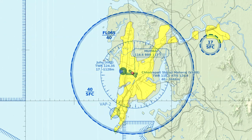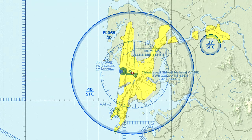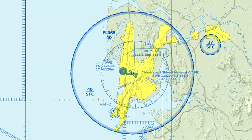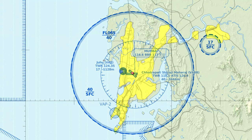Mumbai radar to Bryansk Air 276. Descend and maintain 4,500. Adjust heading to 290. Contact Al Dhafra approach on 124.40. Transponder frequency 1243.